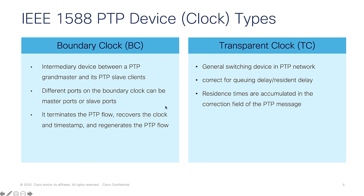Boundary clocks recover the time at intermediate points across the network and forward the time in a new set of messages. Typically these clocks are found in switches and routers in the network and help reduce the effect of delay variation caused by queuing delays. They terminate the PTP flow, recover the clock, timestamp, and regenerate the PTP flow, acting as an intermediary device between a PTP grandmaster and its PTP clients.